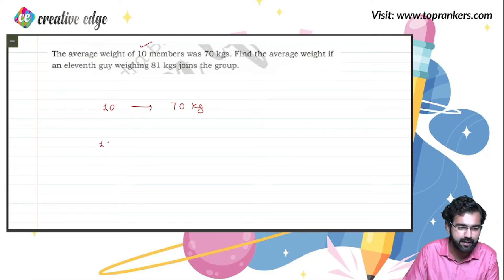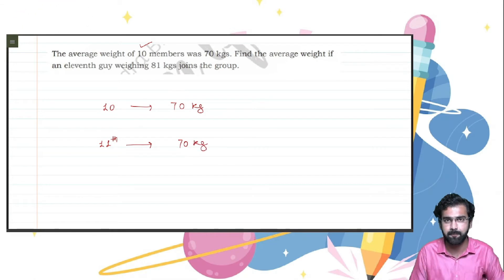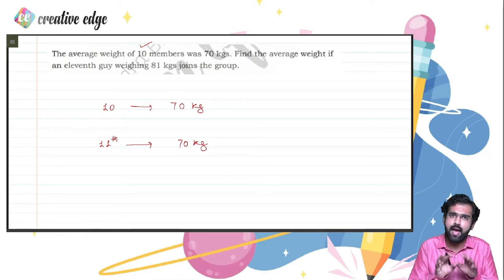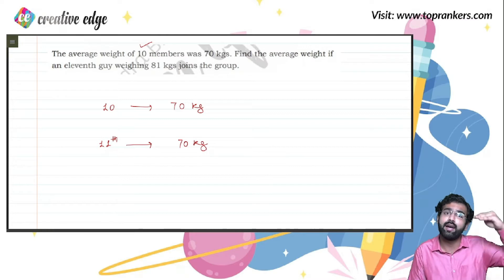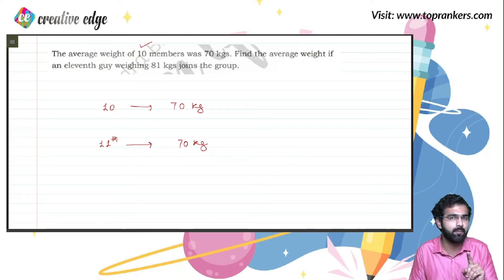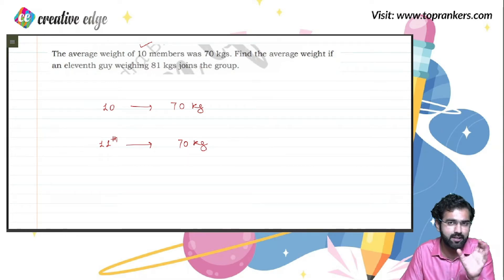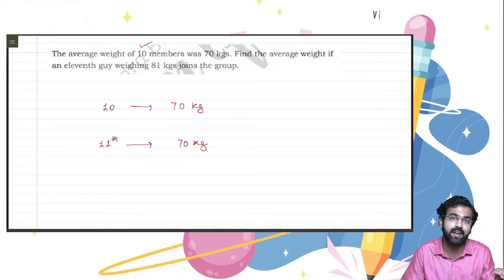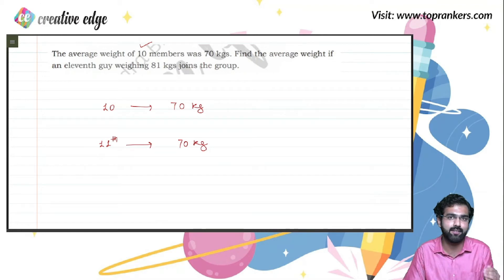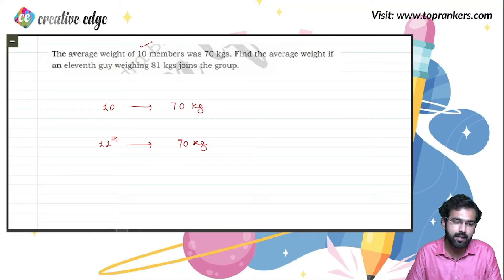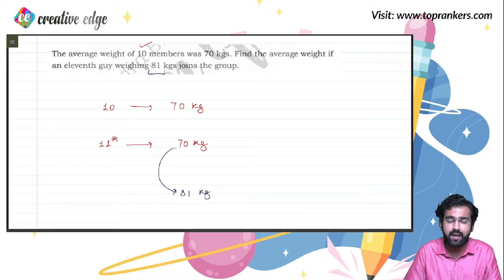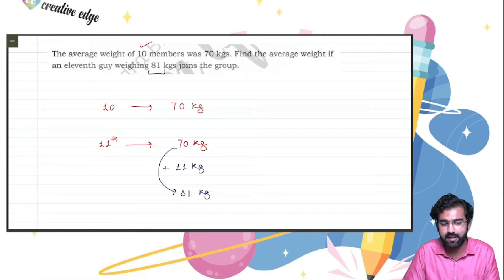Now, if the 11th candidate who is joining the group had a weight of exactly 70 kg — equal to the existing average — the average would not change. But our new candidate actually weighs 81 kg, which means he is bringing 11 kg of extra weight beyond the average.